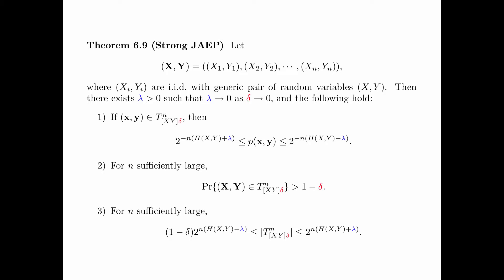Third, for n sufficiently large, the size of the jointly delta-typical set is lower bounded by (1 − δ) · 2^{n(H(XY)−δ)} and upper bounded by 2^{n(H(X,Y)+λ)}. The proof of the strong joint AEP is exactly the same as the proof of the joint AEP, so it is omitted.